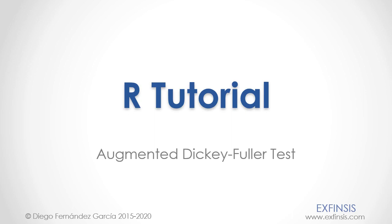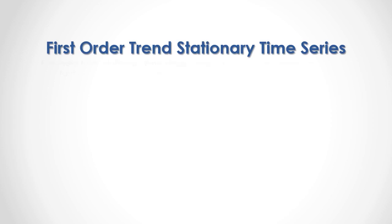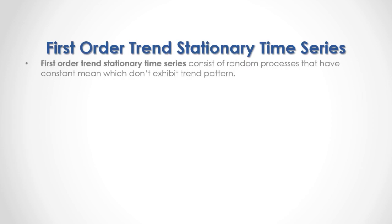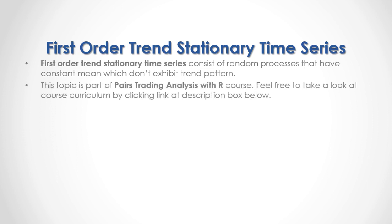Our tutorial: Augmented Dickey-Fuller Test. First-order trend stationary time series consists of random processes that have a constant mean which don't exhibit a trend pattern. This topic is part of a Pairs Trading Analysis course.